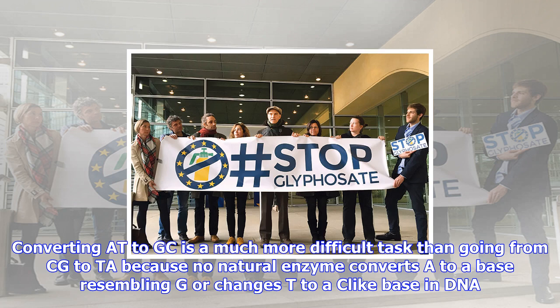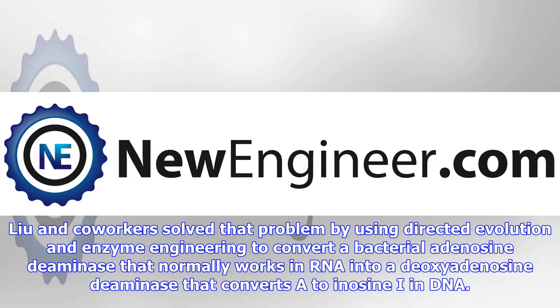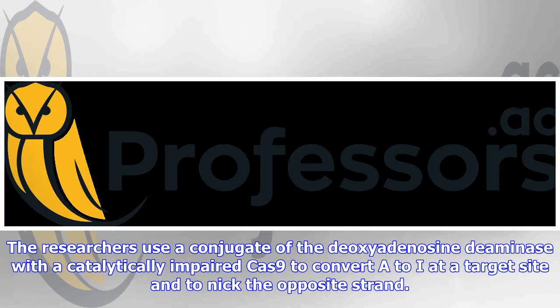Converting TA to GC is a much more difficult task than going from CG to TA, because no natural enzyme converts A to a base resembling G or changes T to a C-like base in DNA. Liu and co-workers solved that problem by using directed evolution and enzyme engineering to convert a bacterial adenosine deaminase that normally works in RNA into a deoxy-adenosine deaminase that converts A to inosine (I) in DNA.